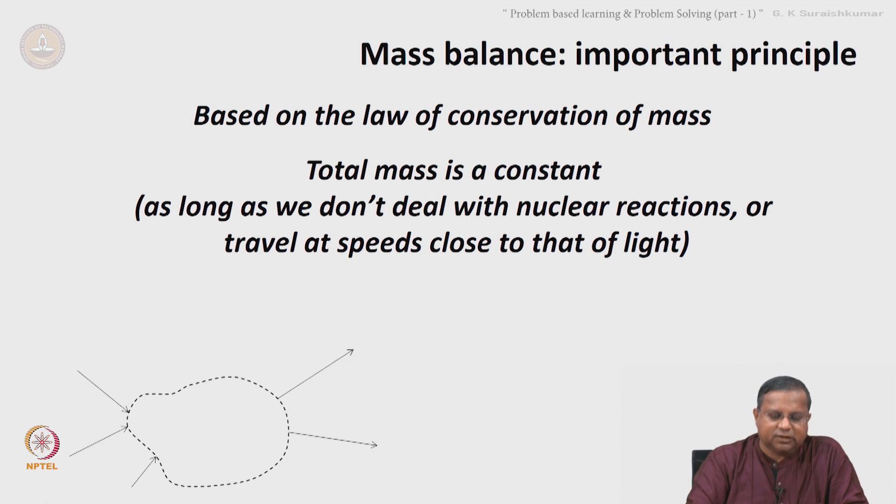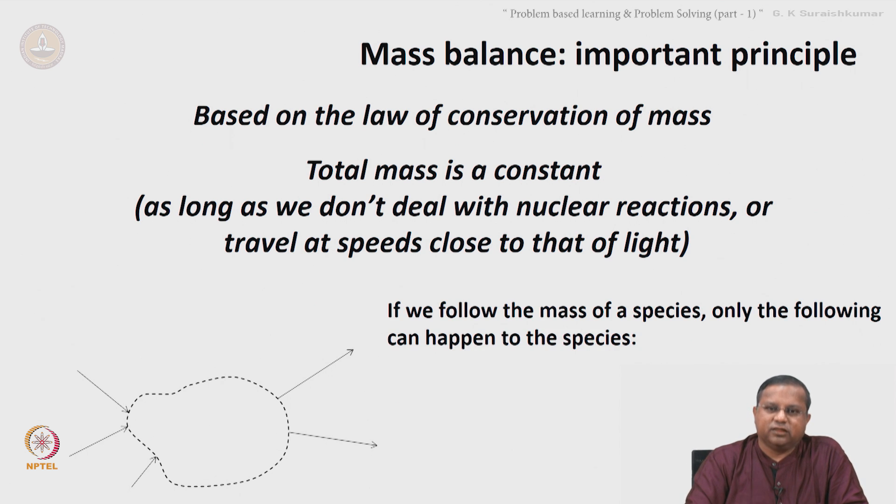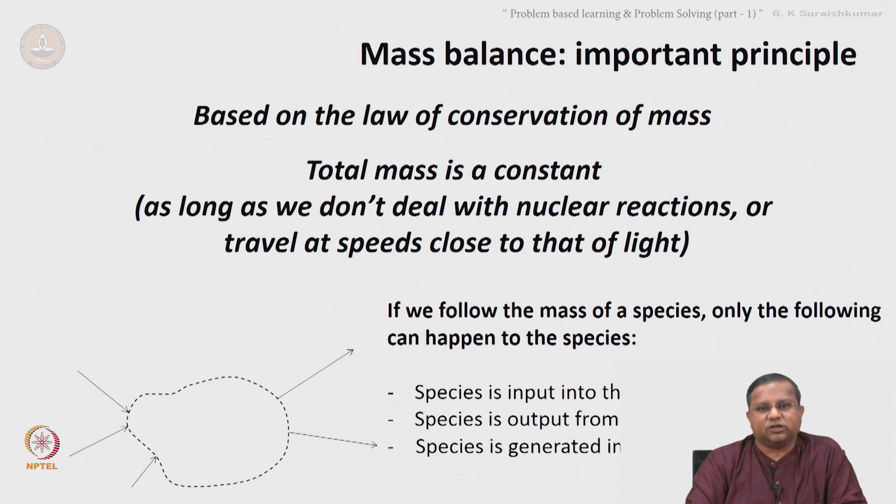If you look at a species, the mass of a species, or just the species first, there are only the following things that can happen to the species: input, output, generation, or consumption.